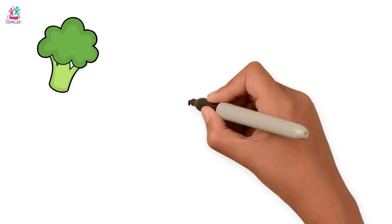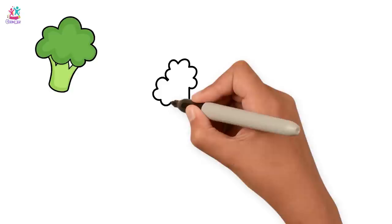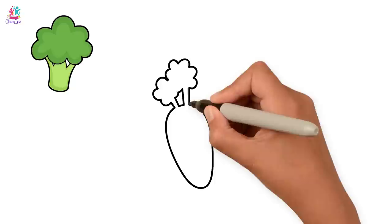Next vegetable is carrot. First the leaves. Then the carrot. Easy right? Don't forget the outline.